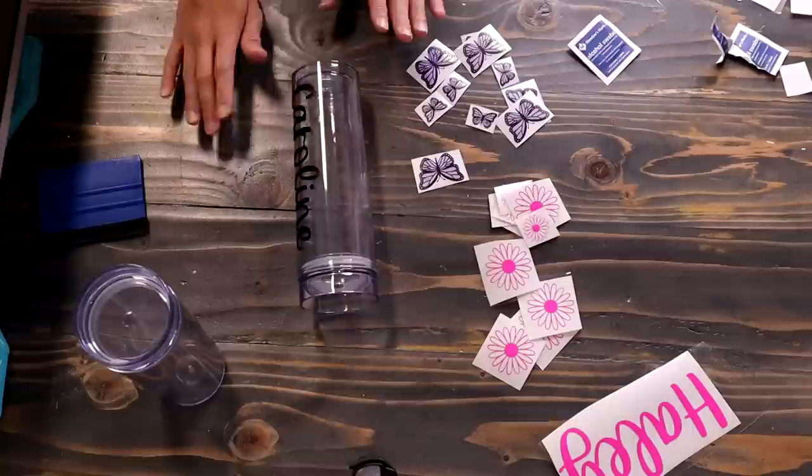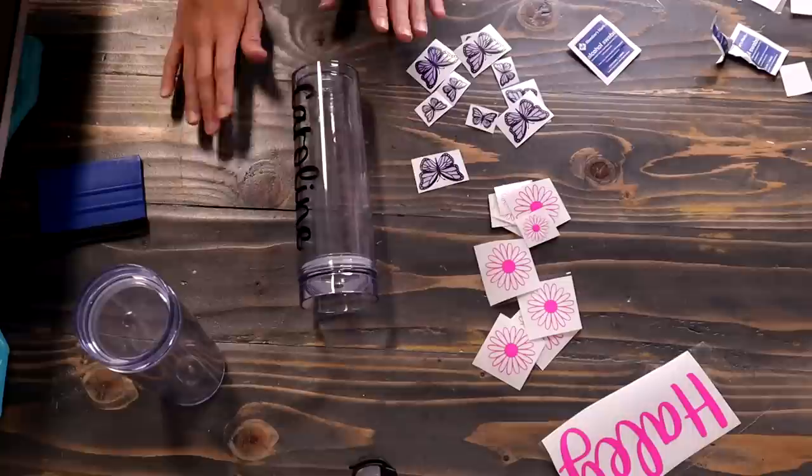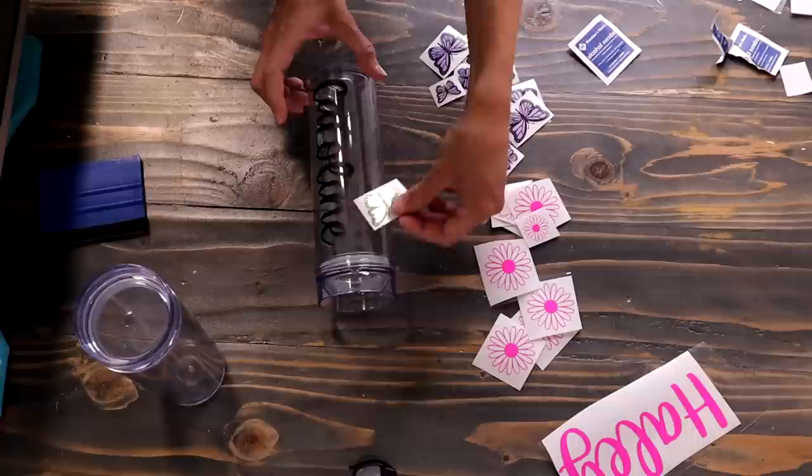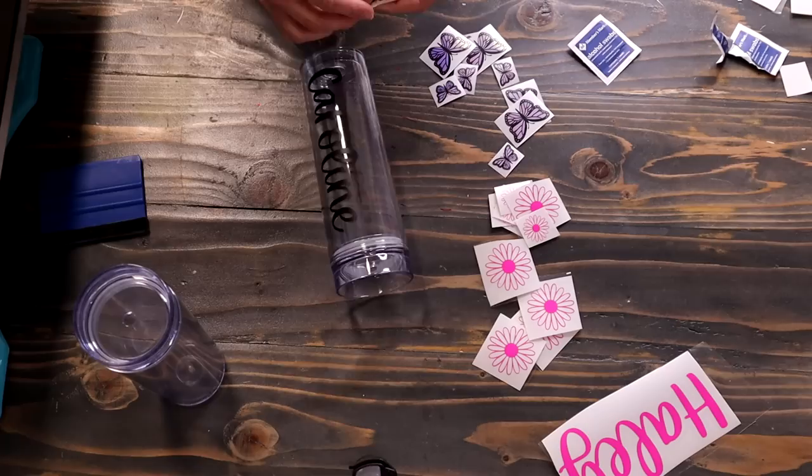Okay. Now we're going to go ahead and apply our butterflies. I'm so excited to see it. So the way I have it is I have five of the one and a half inch butterflies, and then I have five of the 0.75 inch butterflies. So I'm just going to kind of place them just sporadically around the cup, just however looks good to me.